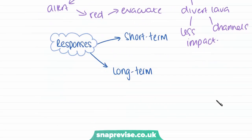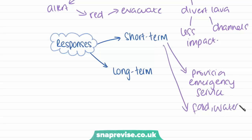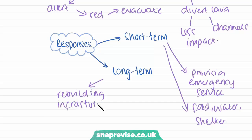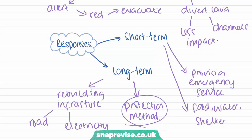The responses to a volcanic event can be short-term and long-term. A short-term response would be the provision of emergency services to deal with any fatalities or injury, as well as providing food, water supplies, and shelter. Long-term responses would include rebuilding infrastructure such as roads, electricity, and buildings, and also developing future methods of protection — analysing the event to look at how it could have been dealt with better and devising improved methods for next time.